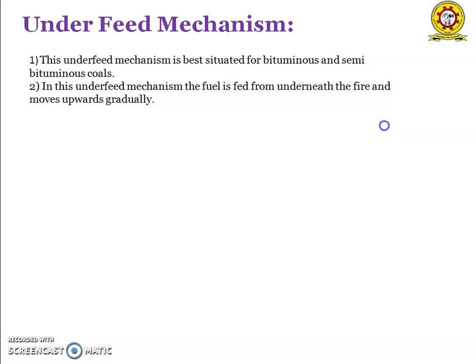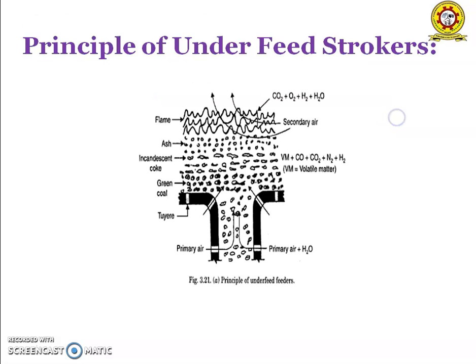And the under feed mechanism. This under feed mechanism is best suited for bituminous and semi-bituminous coal. In this under feed mechanism, the fuel is fed from below the fire and moves upward gradually. The air entering through the grate openings comes in contact with the raw fuel and mixes with the volatiles released from the raw fuel and enters into the combustion chamber. This is the basic principle of the under feed stoker.